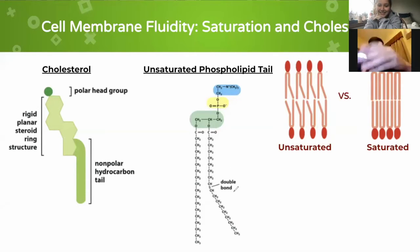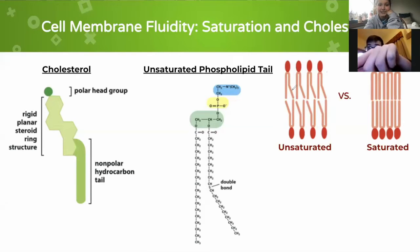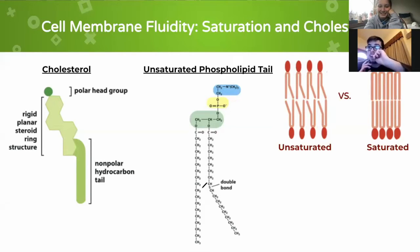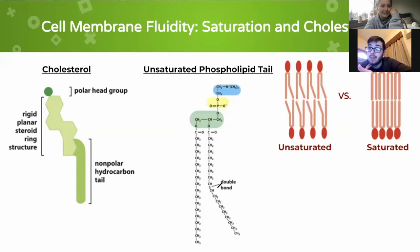The reason that they're so fluid is due to these unsaturated tails. You can see that kink in the bond there. And there's also cholesterol, which is a stiffening agent, and that helps make the cells less fluid.